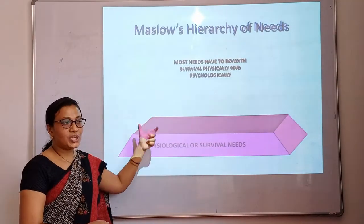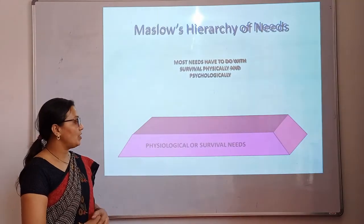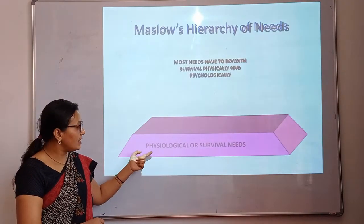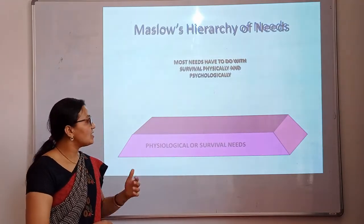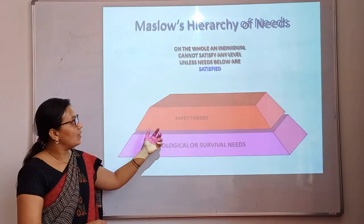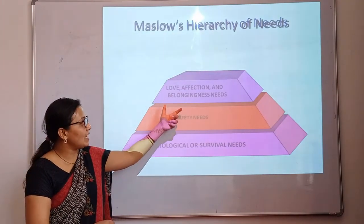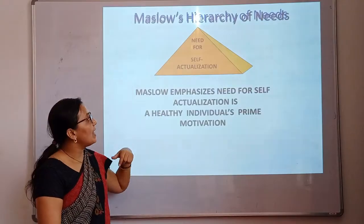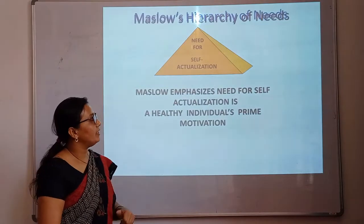The chronological order of motivation discussed in this theory is: physiological or survival needs, safety needs, love, affection and belongingness needs, esteem needs, and lastly self-actualization needs.